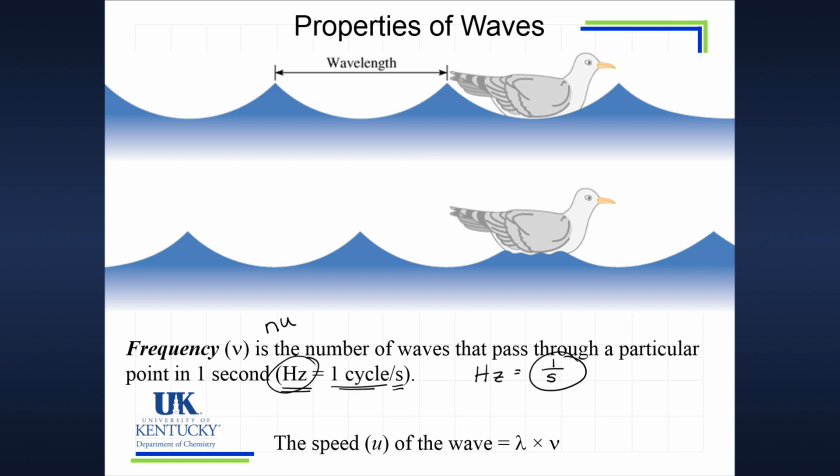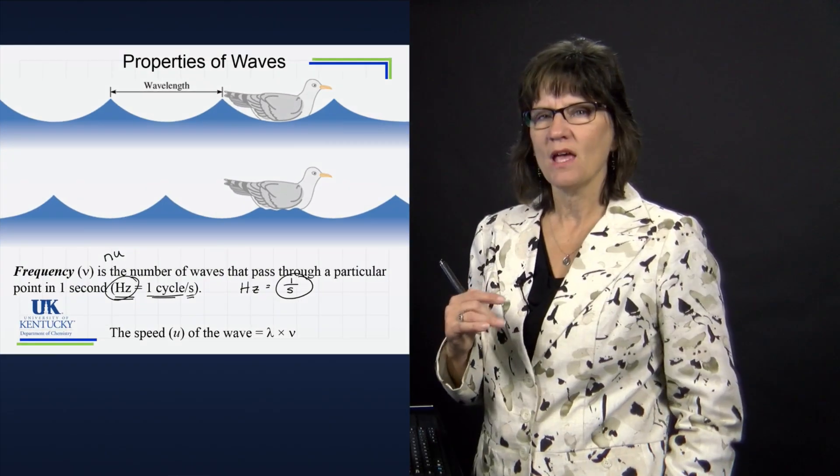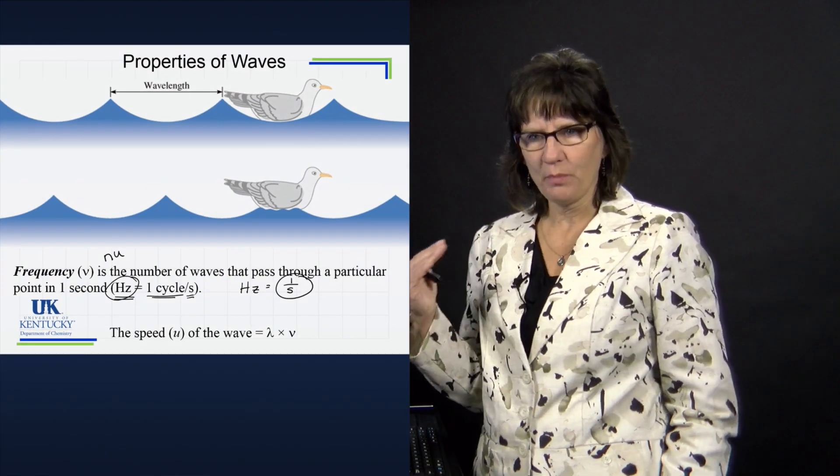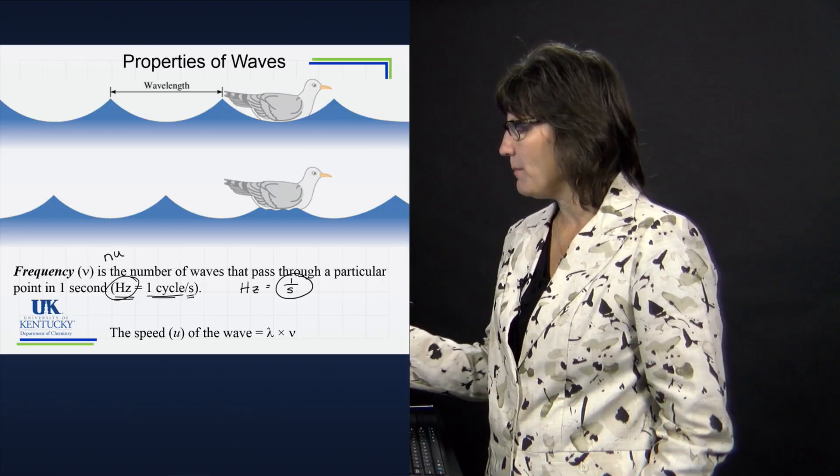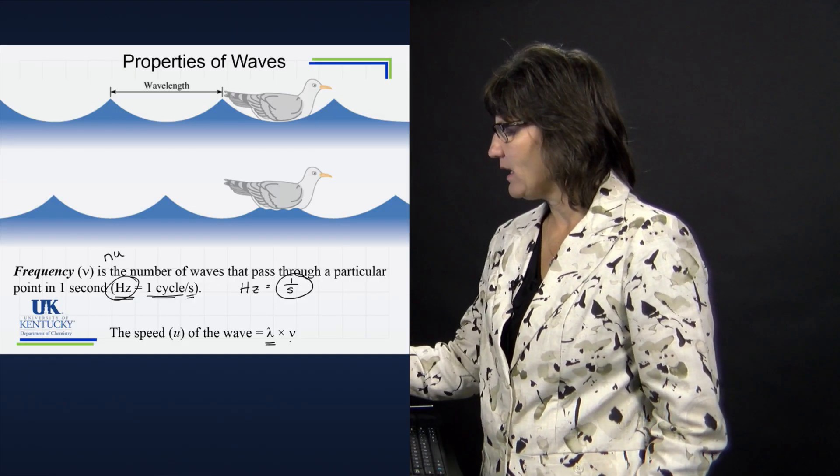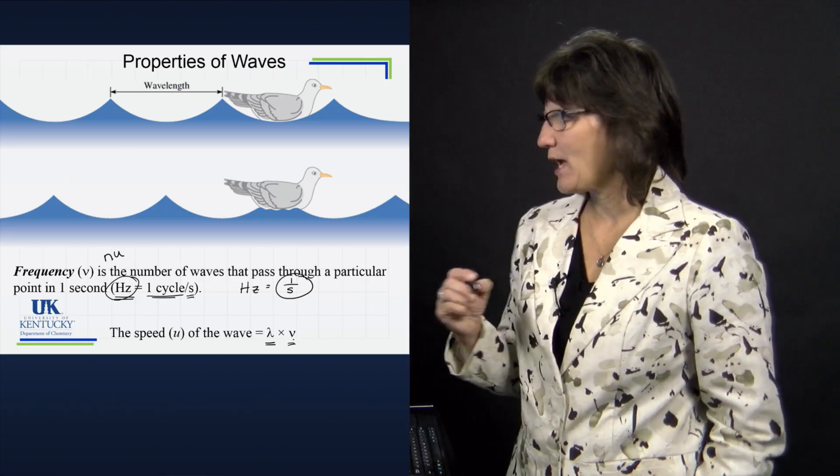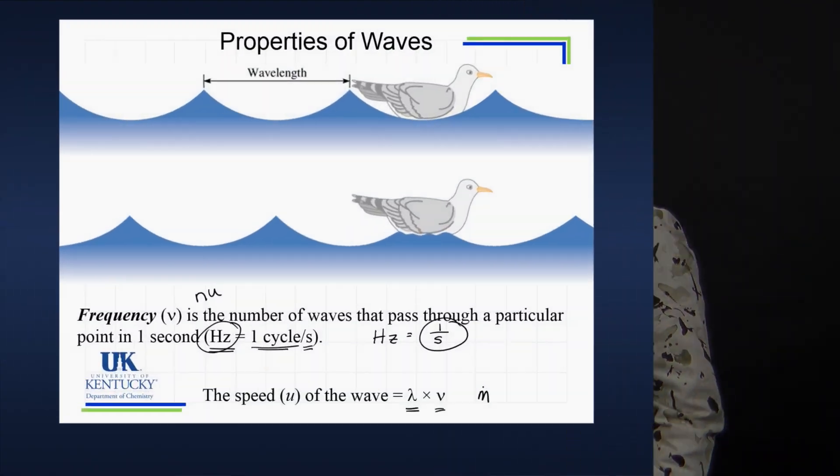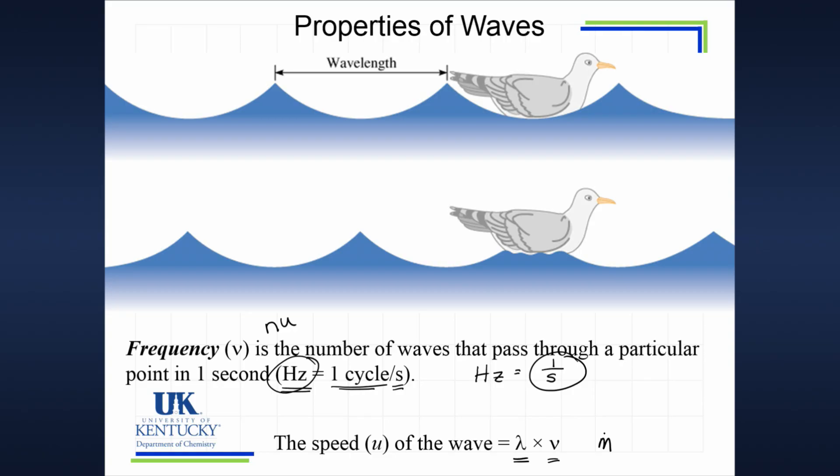Waves travel at various speeds - whether sound waves, ocean waves, or light waves. All waves have their own unique speed, and that speed is a product of wavelength and frequency. If wavelength is measured in meters and frequency is one over seconds, unit-wise we have meters per second. That is a speed.